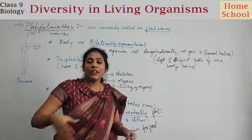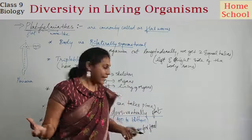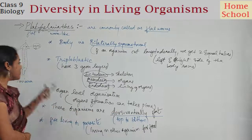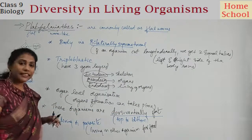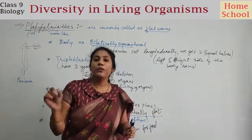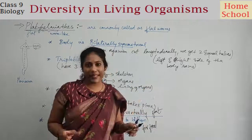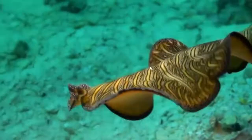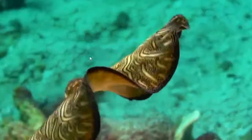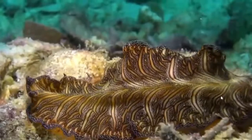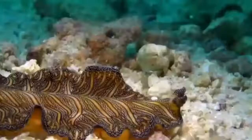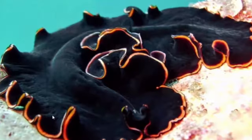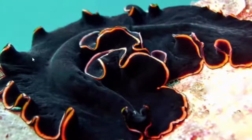Another important point is these organisms are dorsiventrally flat from top to bottom. Now let us watch a visual on Phylum Platyhelminthes, famously called flatworms. You can see how flat they are - dorsiventrally flat means from top to bottom the organism is flat. This is another example of Platyhelminthes.